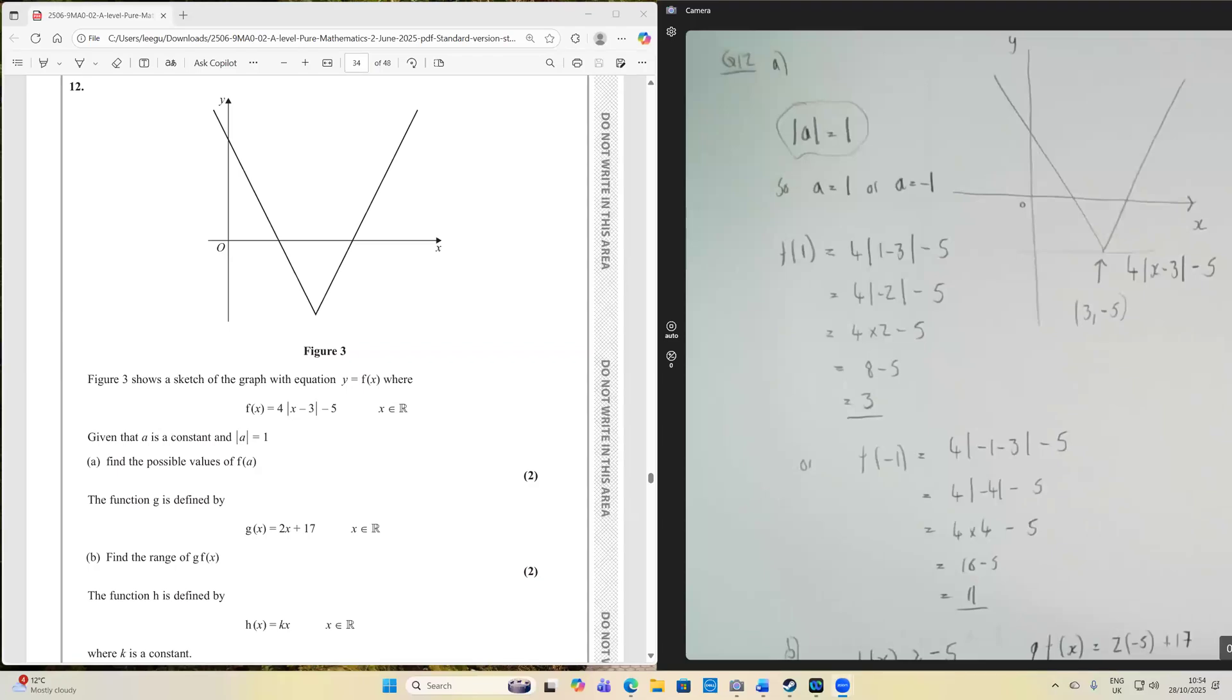Hello, everyone. We're on question 12 now of paper 2 from 2025 Excel, and it's one of those popular modulus functions, modulus graph questions. So figure 3 shows the graph of the equation y equals f of x, where f of x is equal to 4 times the modulus of x minus 3 minus 5.